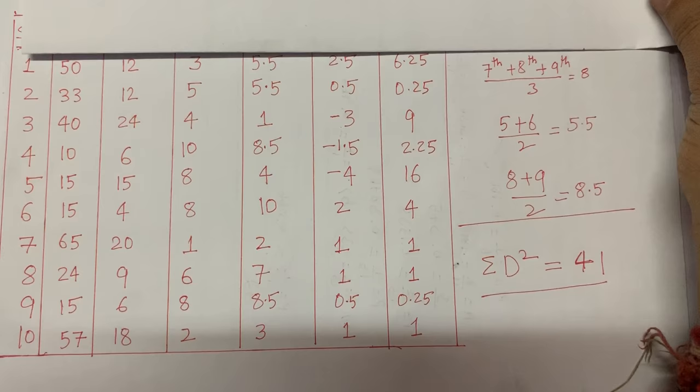Working through the arithmetic, this comes out to 1 minus (44 × 6) divided by 990, giving approximately 0.733. This is a high positive correlation. The positive sign means both judges think in the same direction — if judge one gives a candidate high marks, judge two also gives high marks. A value of 0.733 indicates both judges are pretty closely aligned with each other.